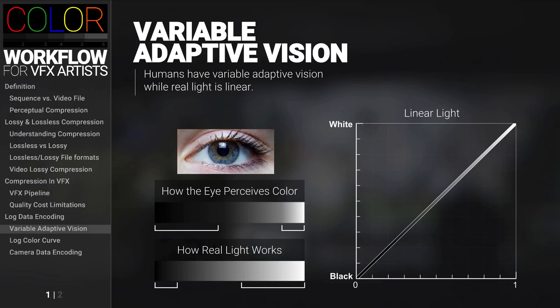So if you look at our linear curve here, you can see that the dark values and the light values take up the same amount of space, which doesn't really match the human eye very well. Because in reality, there should be more space dedicated on this color curve to dark values than there would be to light values.